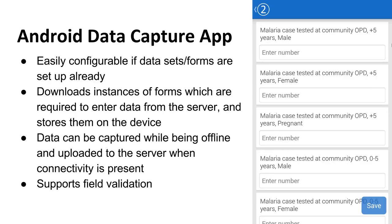We also have the Android data capture application. If data sets and forms are already set up, then this is easy to configure. The Android data capture app downloads instances of forms required to enter data from the server and stores them locally on the Android device. This means that data can be captured while offline and uploaded back to the server when connectivity is present. We will show an example of this later on.